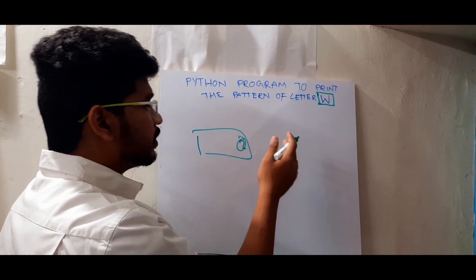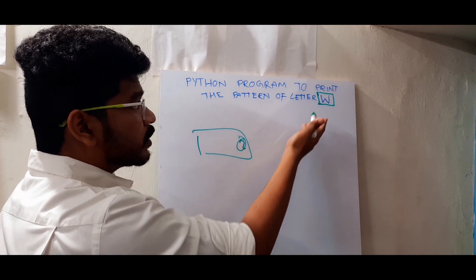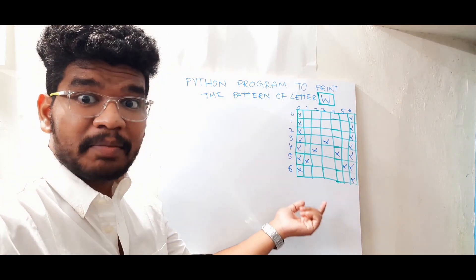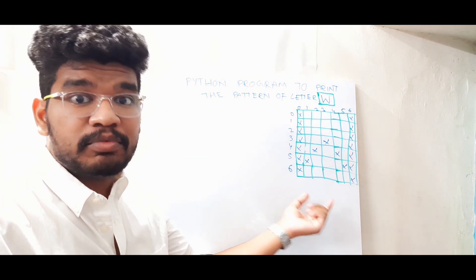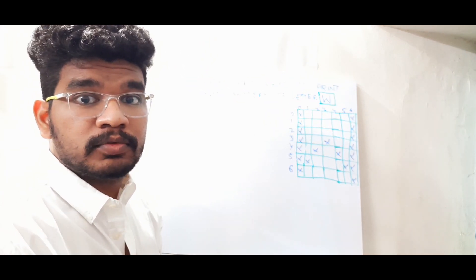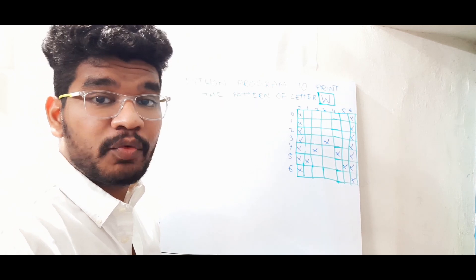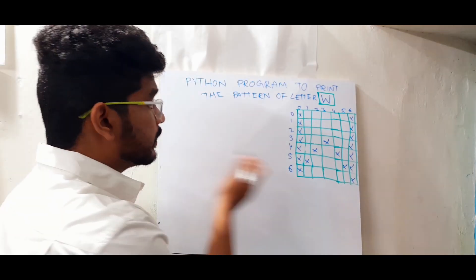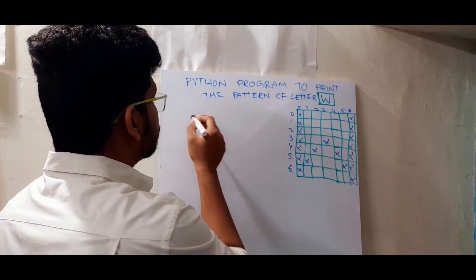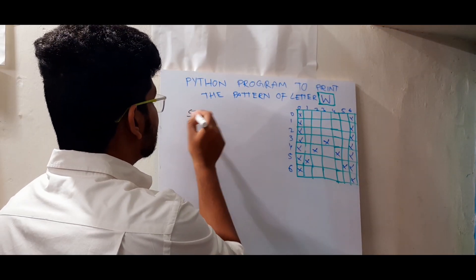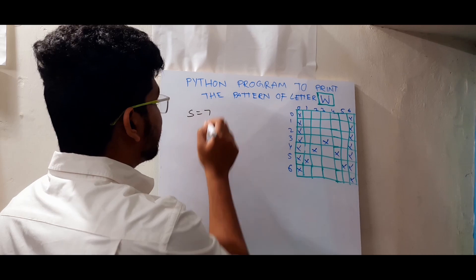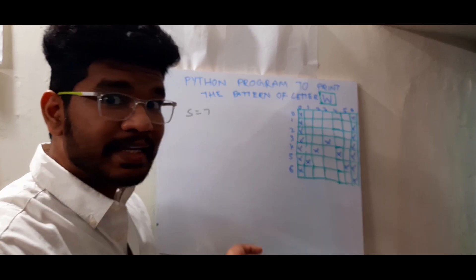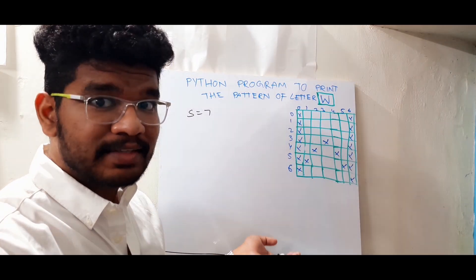So now let's start with the pattern of letter W. This is the pattern of letter W I am going to print now. Let's see how we can print that. Let us assume the size as 7 here — I am statically assuming the size as 7.